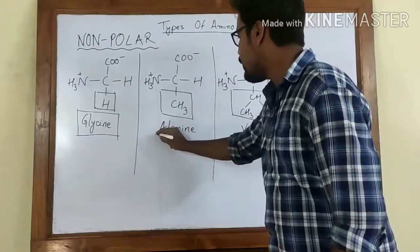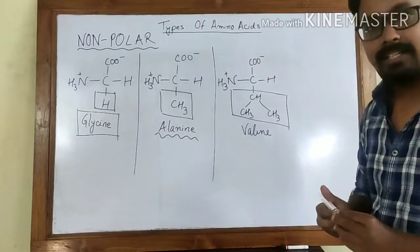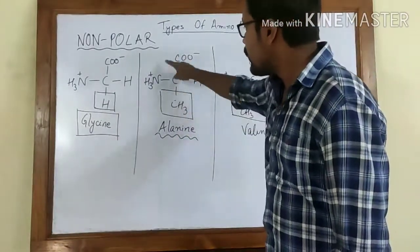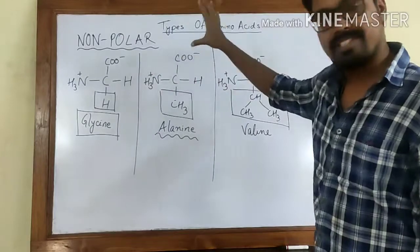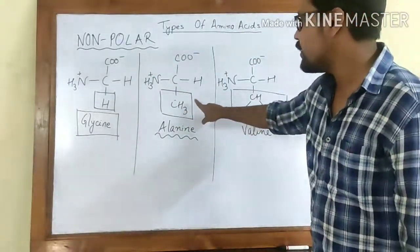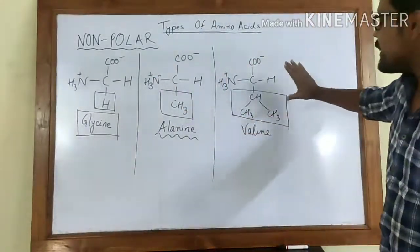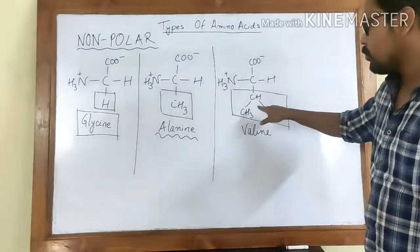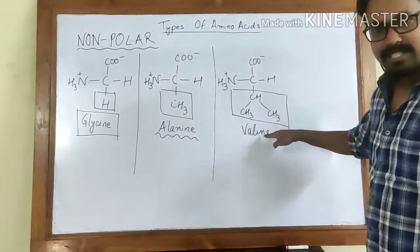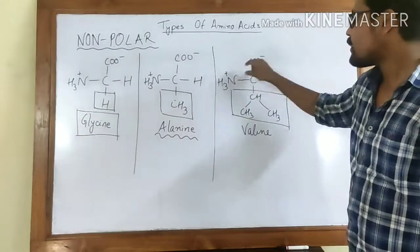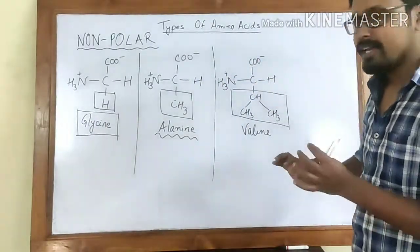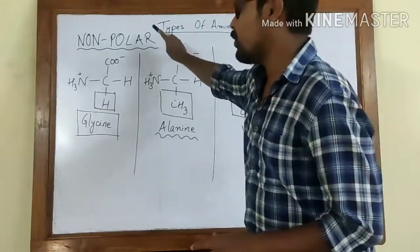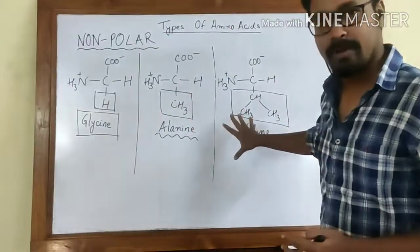The second amino acid is alanine. It has one methyl group (CH₃) attached as the R group along with the common amino acid backbone structure. For valine, the R group is extended to three carbons — a propyl group: CH(CH₃)CH₃. So three carbons are attached to the general amino acid structure. Just know the structures and remember the key property: these are non-polar.